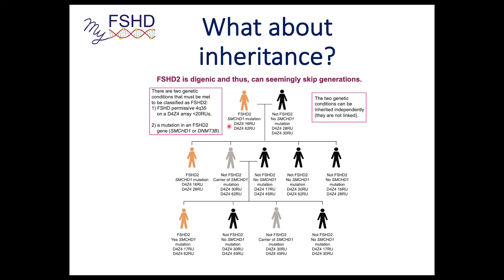You need to inherit an FSHD2-sized D4Z4 array — those between 9 and 20 repeat units — and the SMCHD1 mutation. Someone with FSHD2 already has both, while an unaffected person would have potentially neither. For inheritance, it's less likely to inherit both: only 25% of the time would an individual inherit both, since 50% of the time you inherit the permissive-sized array and 50% of the time you inherit the SMCHD1 mutation. So an individual could be a carrier of the SMCHD1 mutation — they didn't get a permissive-sized array, but they still carry the FSHD2 mutation. This person is essentially healthy in the family, but they're a carrier.